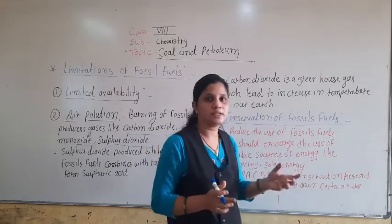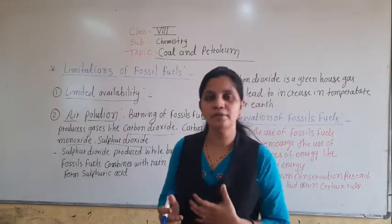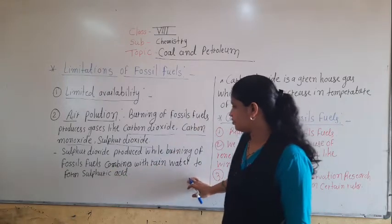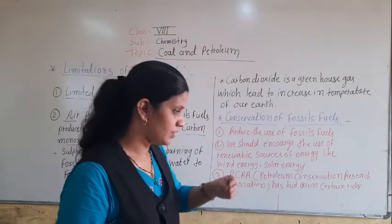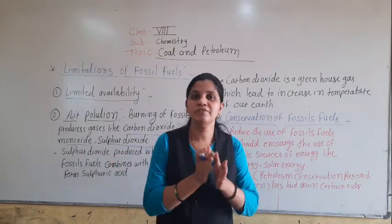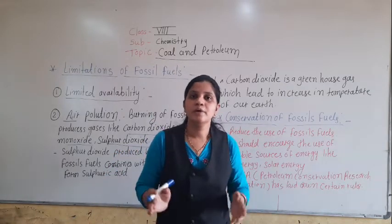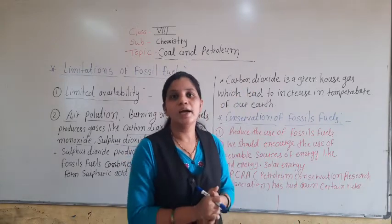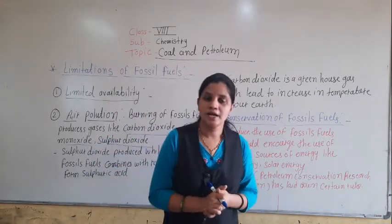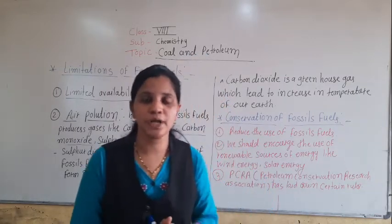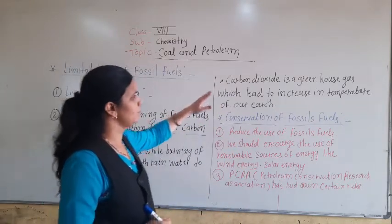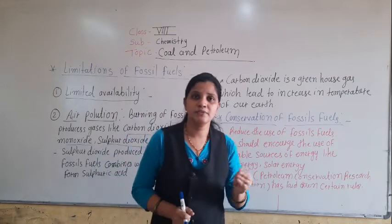Another effect is acid rain. Sulfur dioxide produced by burning of fossil fuels combines with rainwater to form sulfuric acid. When that sulfur dioxide gas combines with rainwater, the resulting rain is known as acid rain. It is harmful for plants, animals, and for us as well, and it is caused by burning of fossil fuels.